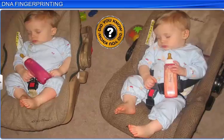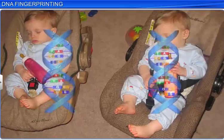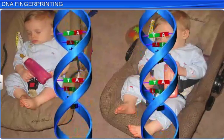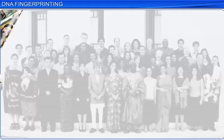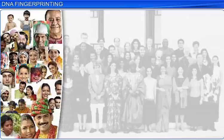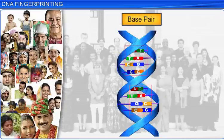Did you know that except for identical twins, it is very unlikely for two individuals to have the same DNA pattern? It is the small difference in base pair sequences of DNA that make the phenotypic appearance of each individual unique.